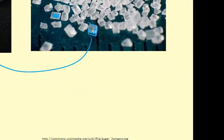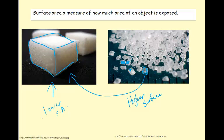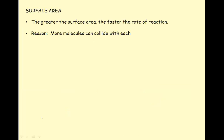The free sugar has a higher surface area than the sugar cube. When we have chemical reactions occurring, substances with higher surface area react more quickly than those with lower surface area. With surface area, the greater the surface area, the faster the rate of reaction, because more molecules can collide with each other.